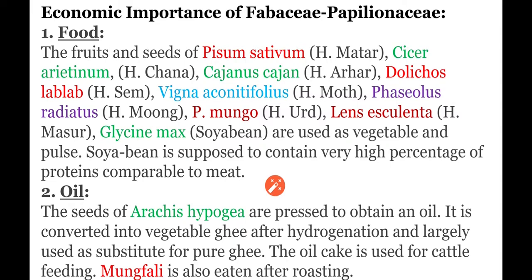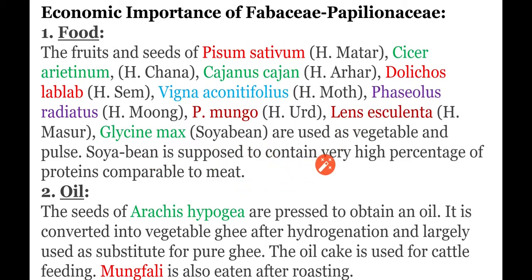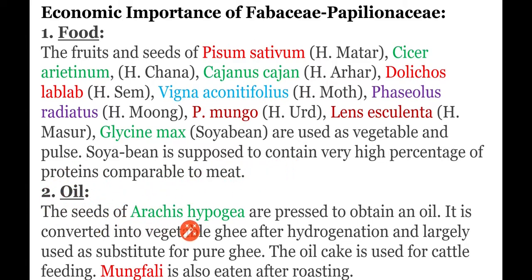Soya bean is said to contain a very high percentage of proteins compared to meat. All these plants are used as pulses, and soya bean contains a high percentage of protein.